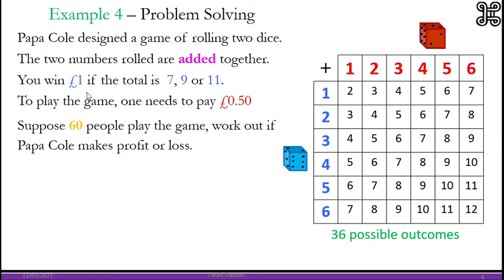Now to win, you must score 7, 9 and 11. So let's work out probability of winning. Now before that, find out how much money you have. If 60 people are playing, 60 people, each one is going to give you 50p. So 50 times 60 is 30 pounds.